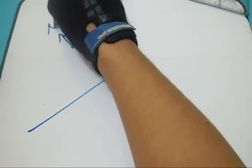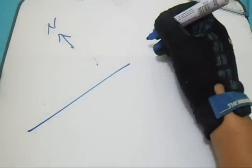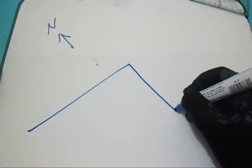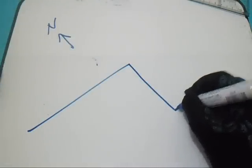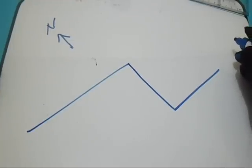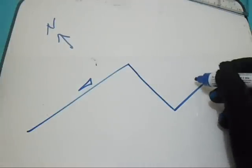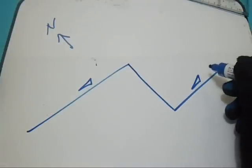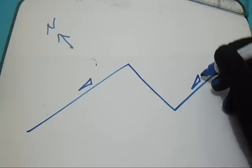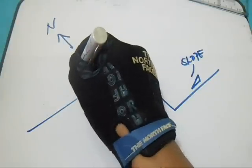For example, we have an example here. This is the line and we have a north here. This is the north, and this line is going to east, then going to south, and then going to east again. So the slope is — if you see the triangle like this, and we have also a triangle like this — this is the slope.